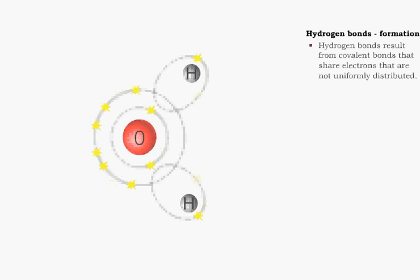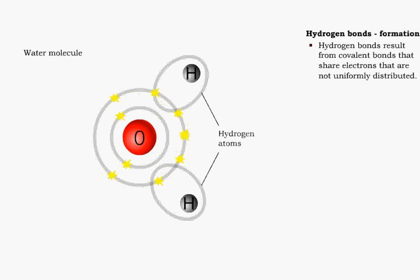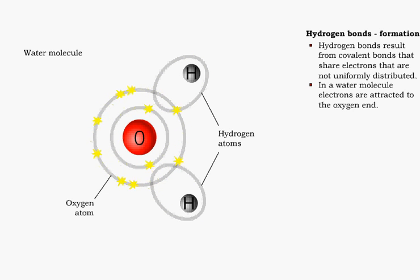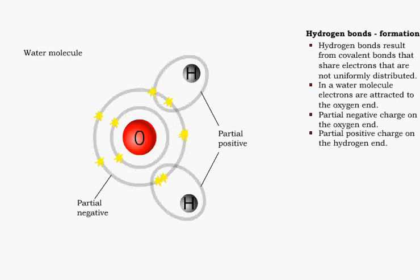When electrons are shared within a molecule, they are not always uniformly distributed. A water molecule has eight outer electrons contributed by its hydrogen and oxygen atoms. The electrons are quite strongly attracted by the oxygen part of the molecule. This results in the oxygen end of the molecule having a slight negative charge, while the hydrogens have a slight positive charge. These partial charges are indicated by the Greek letter delta.